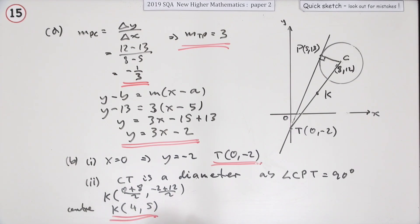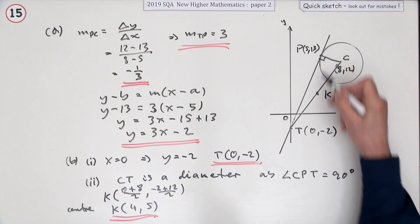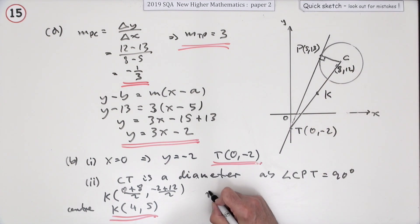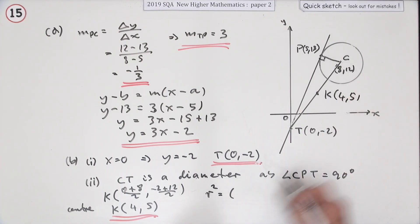Last thing you need is the radius. The radius is the distance from the centre to any of the three points. So the radius squared, I'll just pick, I know k is 4, 5. I'll just take them because they're beside each other. Difference in the x's, 8 take away 4. Difference in the y's, 12 take away 5. That's 4 squared plus 7 squared. That's 16 plus 49, run out of space. That's 65.